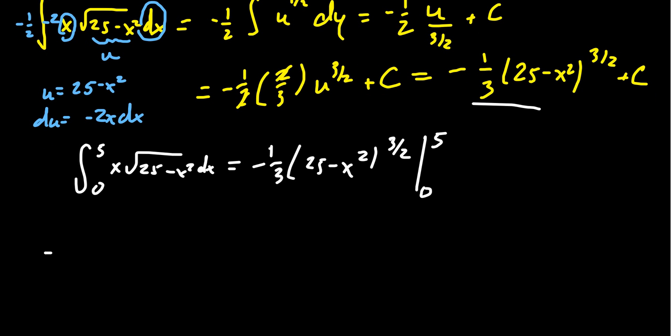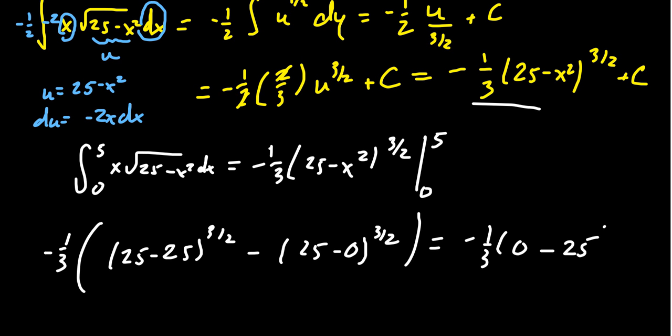When we plug in the 5 and the 0, we end up with negative 1 third. We get 25 minus 5 squared, which is 25, raised to the 3 halves. Then we subtract 25 minus 0 squared, which is 0, to the 3 halves. Notice 25 minus 25 is 0, so you get 0 to the 3 halves, which is just 0.